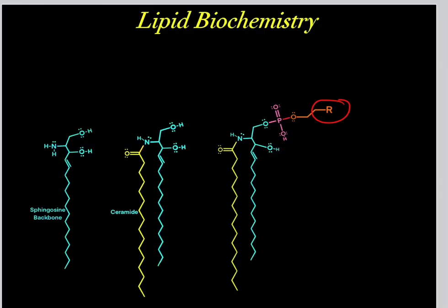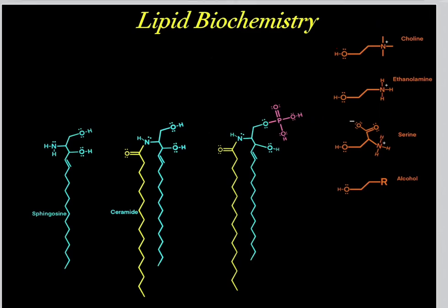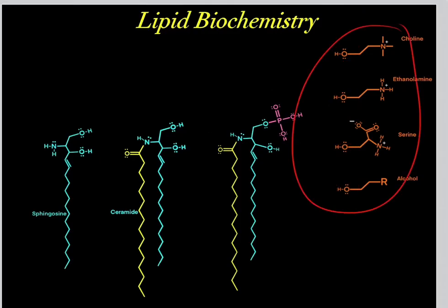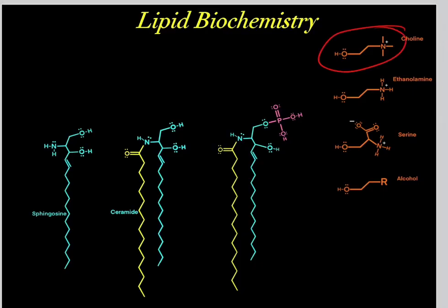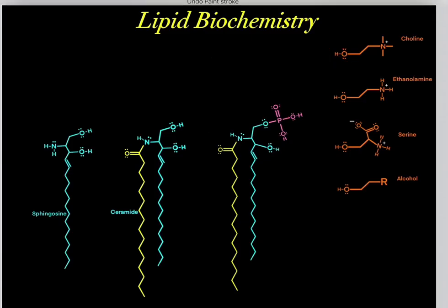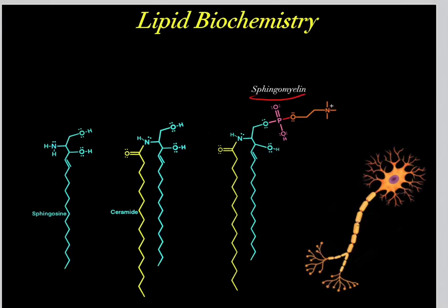It doesn't matter what that R group was — this could literally be any chemical structure you can think of, as long as it has a hydroxyl group. Here are common alcohols you'll see in lipid biochemistry: choline, ethanolamine, serine, and other generic alcohols. For example, we can add choline through mechanism two — we attack forming a bond, we break a bond, these electrons fall on this oxygen — and we would form this compound. We refer to this compound as sphingomyelin.